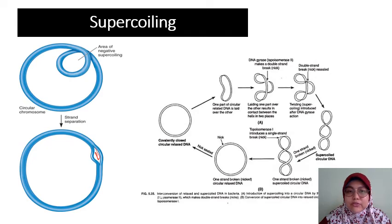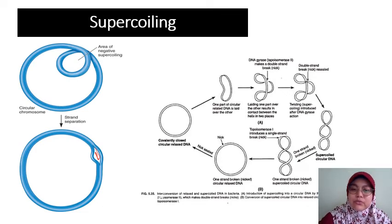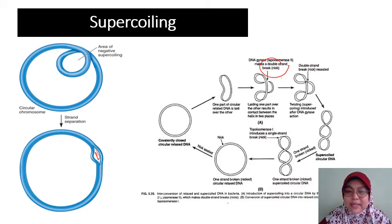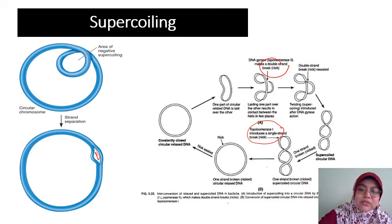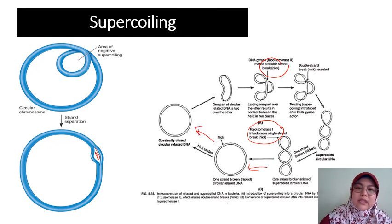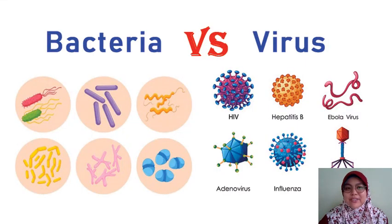Supercoiling is controlled by two enzymes. We have DNA gyrase, or topoisomerase 2, which makes a nick or break in the strand and twists them up. And we also have topoisomerase 1, which nicks the strand and releases the tension so that you get the circular DNA once more. So, there you have the viral genome and bacterial genome. Up next, we'll look at our own genome — the eukaryotic genome — and how that's organized. That's all for today. Bye!